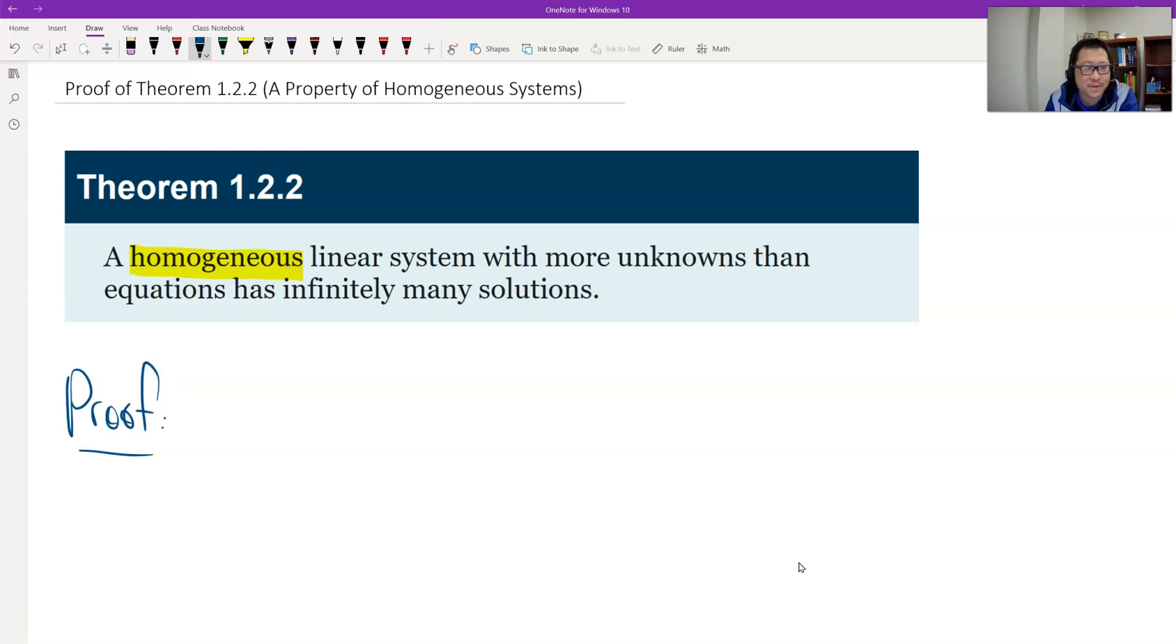It's simple. We only need this result we have before. The number of leading variables plus the number of free variables equals the number of total unknowns.